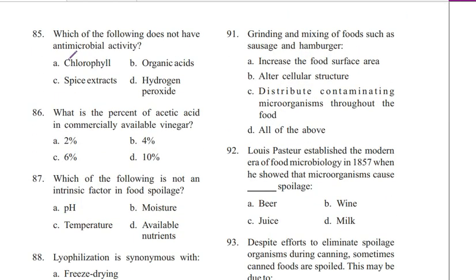Question 85. Which of the following does not have antimicrobial activity? A. Chlorophyll, B. Organic acids, C. Spice extracts, D. Hydrogen peroxide. Answer is A. Chlorophyll.